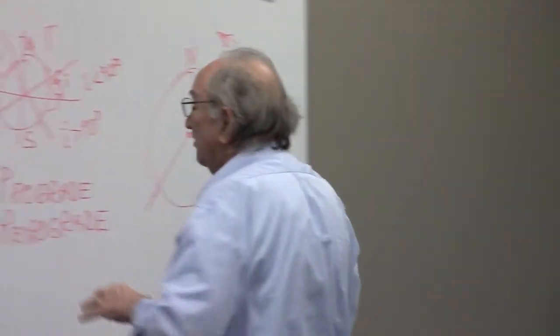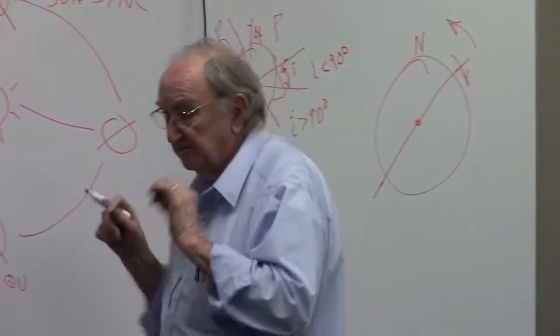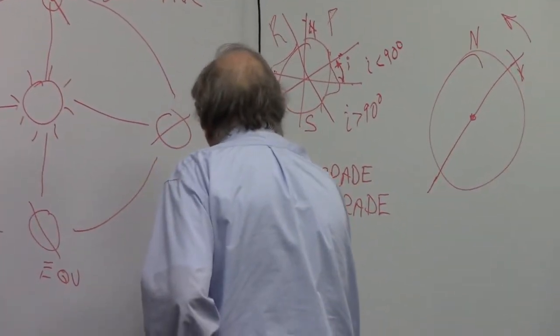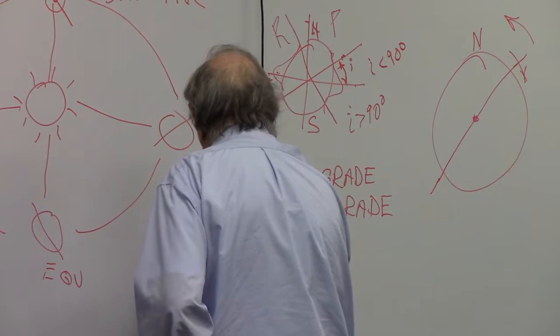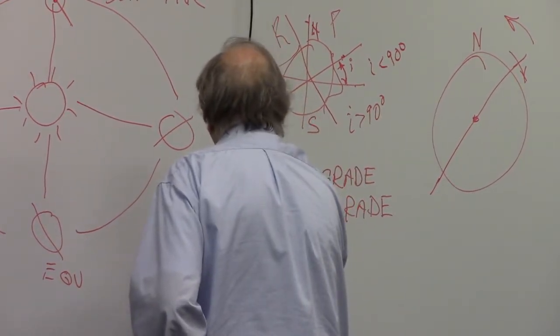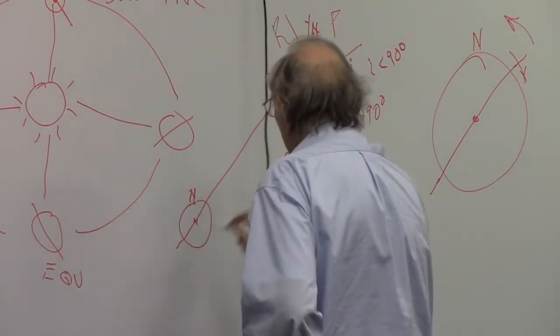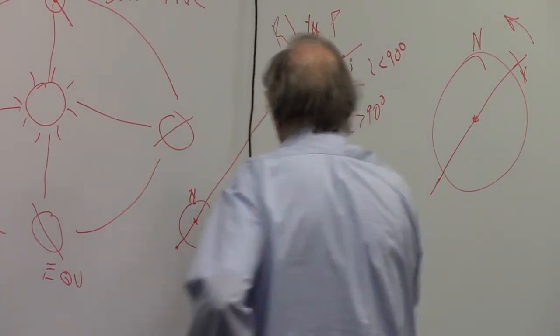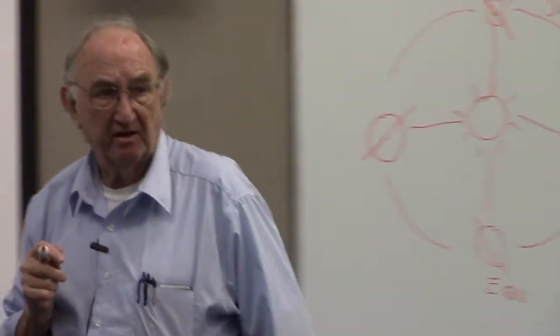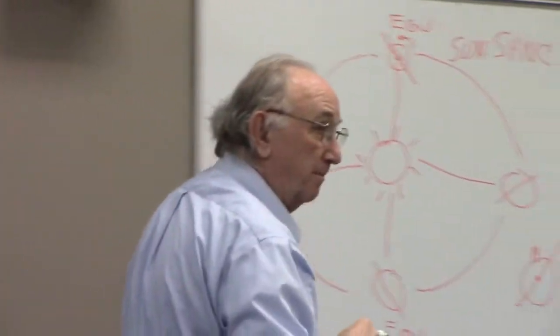Due to the oblateness of the Earth, there's another orbit. This orbit has a plane that goes way up high here and way low there — it's over the northern part. What kind of orbit is that called? That's the Russian one. It's called Molniya. Why do the Russians like that?